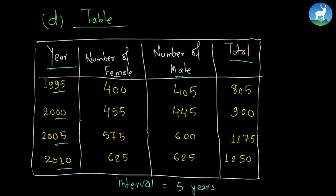The year goes on increasing from 1995 to 2000 to 2005 and 2010. The common interval is five years. You must have noticed that the population of both female and male also goes on increasing.